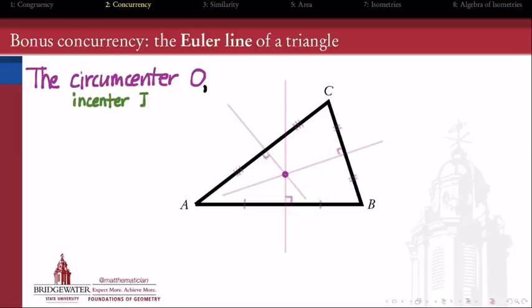Continue with the incenter, call it I. Remember the incenter is the concurrency of a triangle's three angle bisectors. So now I have the circumcenter and the incenter both sketched in, those two points in my triangle.